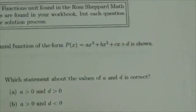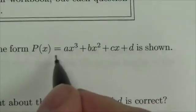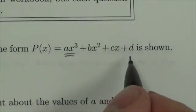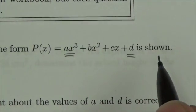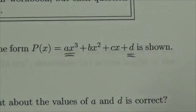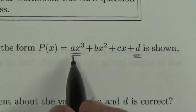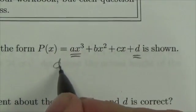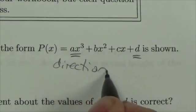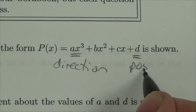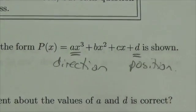Notice that a and d - let's zoom into this. a is our leading coefficient and d is our trailing constant. a is going to affect direction, and d is going to affect position, the vertical placement.